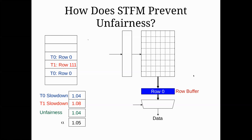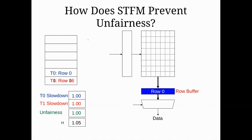Last time we finished up by talking about scheduling. We looked at a few different techniques to schedule our memory accesses. The first one was to optimize for row hits — if we can get a row buffer hit, we will service that request. This led to unfairness, where some threads had a bunch of their requests serviced at once, as we saw with the streaming example.